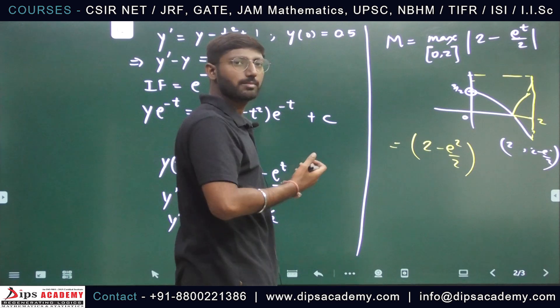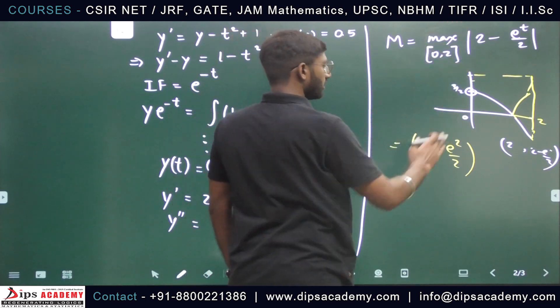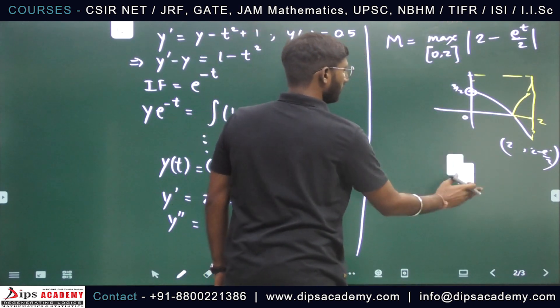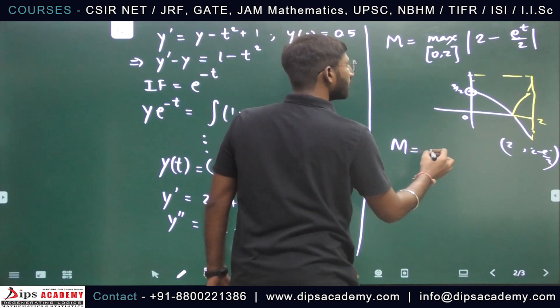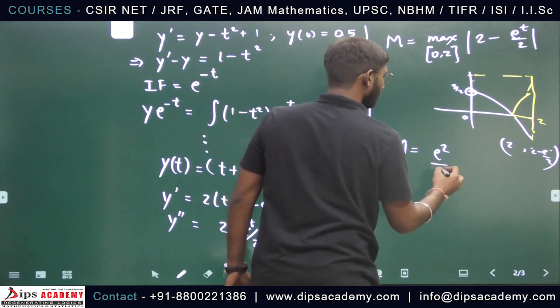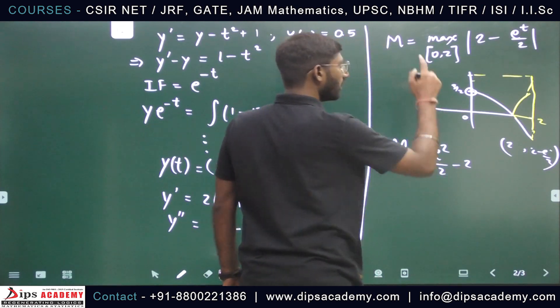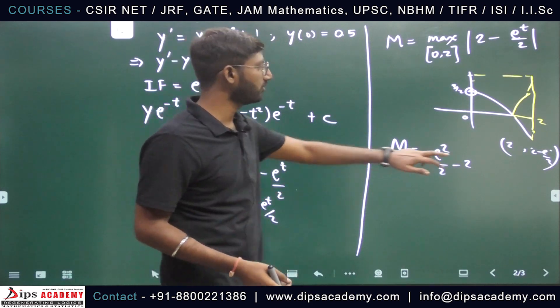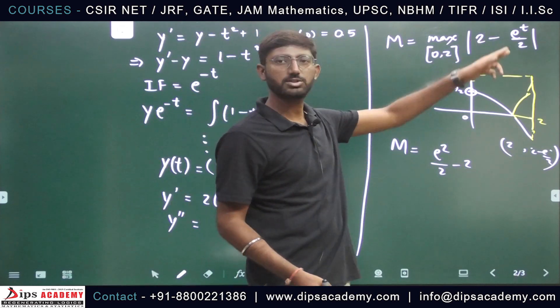One more thing: 2 minus e squared by 2 is a negative value, and there was mod. So we will write m value as it should be e squared by 2 minus 2, because you had modulus.